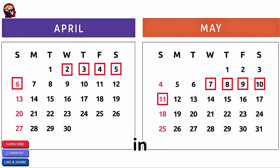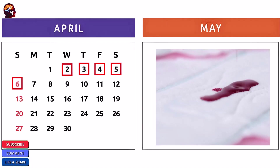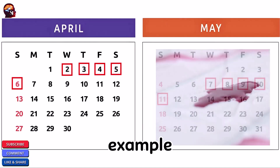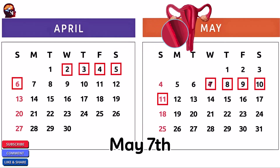The numbers in red indicate the days of the period. For example, the period occurred on April 2nd and May 7th.